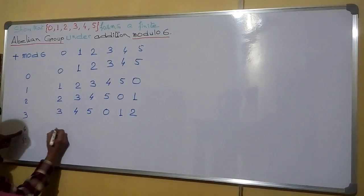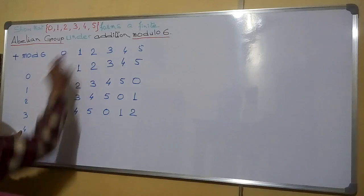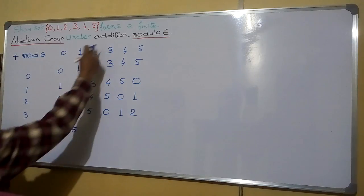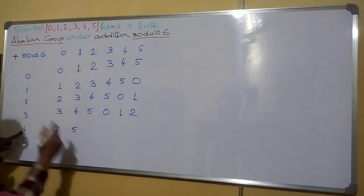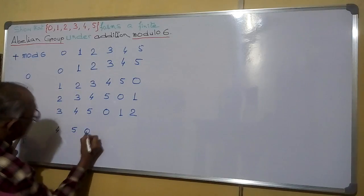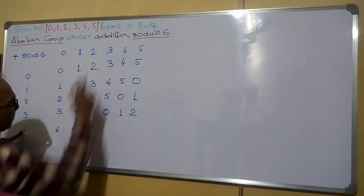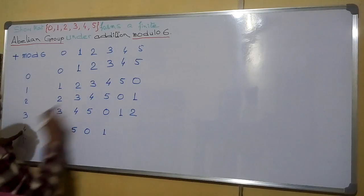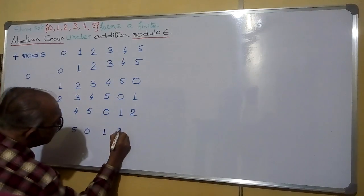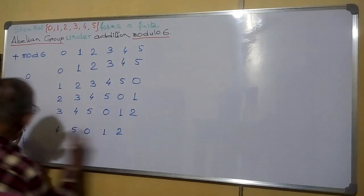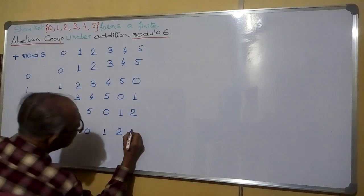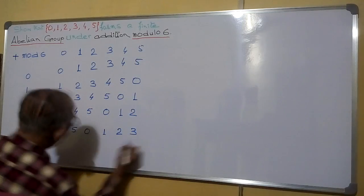4 plus 0 is 4; the remainder is 4. 4 plus 1 is 5; the remainder is 5. 4 plus 2 is 6; dividing by 6 the remainder is 0. 4 plus 3 is 7; the remainder is 1. 4 plus 4 is 8; the remainder is 2. 4 plus 5 is 9; dividing by 6 the remainder is 3.